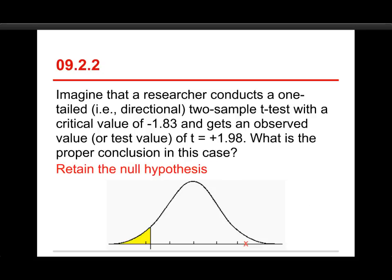Looking at the picture: we have the null distribution with the critical region entirely on the left, since this is a one-tailed test looking for something at the low end. The sample value is far from the mean but on the other side — you can see the red X on the high end. This would be a situation where you'd only act if it showed improvement by lowering scores, but this result actually makes things worse, so you would not act on it.